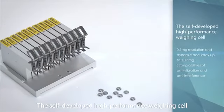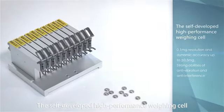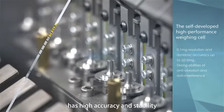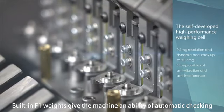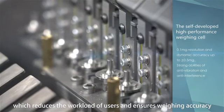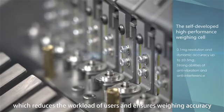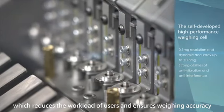Superior Performance. The self-developed high-performance weighing cell has high accuracy and stability. Built-in F1 weights give the machine an ability of automatic checking, which reduces the workload of users and ensures weighing accuracy.